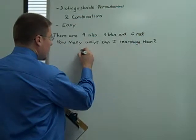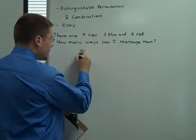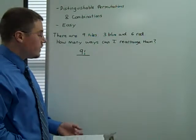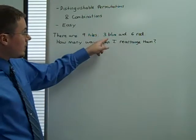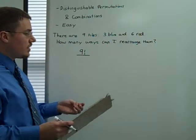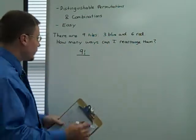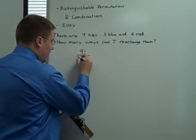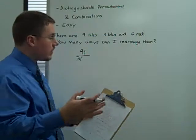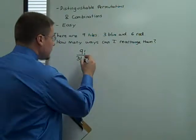We need to figure out a way to take away those repetitions from that nine factorial. So the total number is nine factorial. And when we want to take away, we divide. So we're taking away three blue - the number of ways that three could rearrange itself is three factorial. And the number of ways that the red tiles could cancel each other out or be equivalent is six factorial.